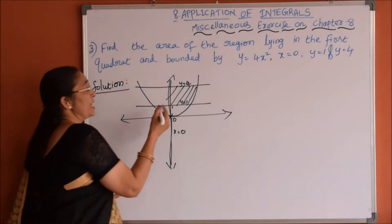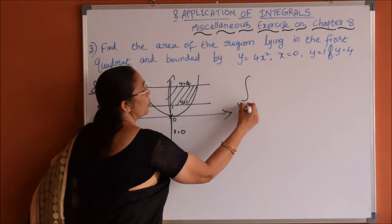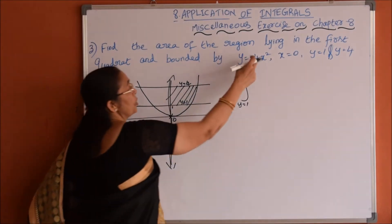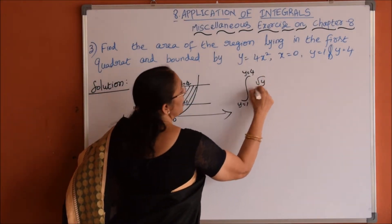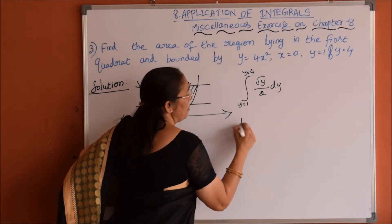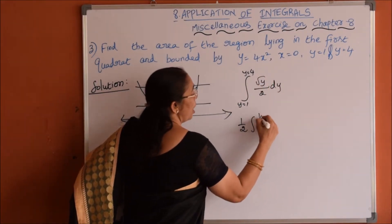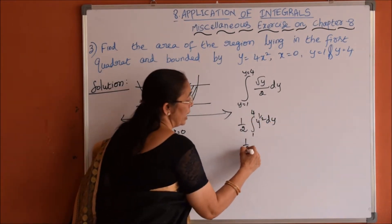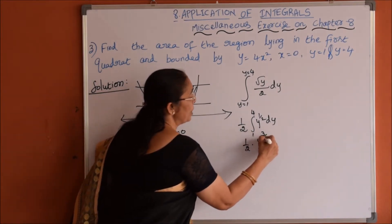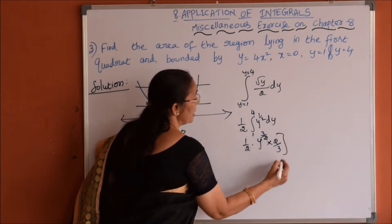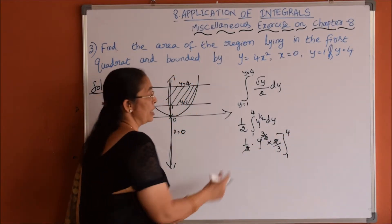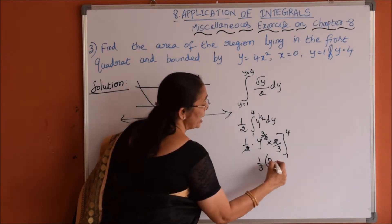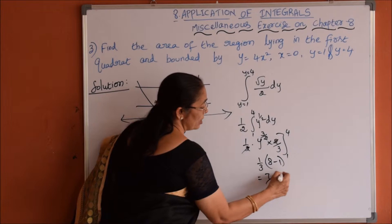The required area is written as integration from y=1 to y=4 with respect to the y-axis, where x = f(y) = root y divided by 2. So it is 1 by 2 times integration of y to the power half dy with limits from 1 to 4. This gives half into y to the power 3 by 2 times 2 by 3 with limits from 1 to 4. On simplification, 4 to the power 3 by 2 is 8, so we get 1 by 3 times (8 minus 1), which is 7 by 3 square units.